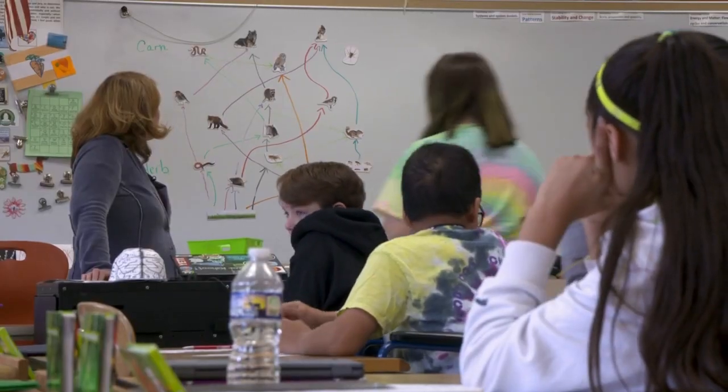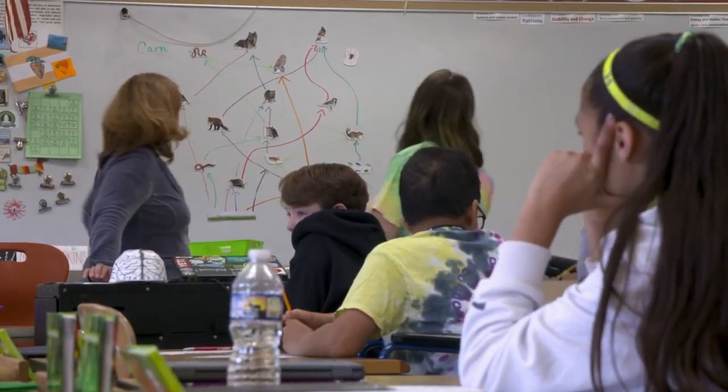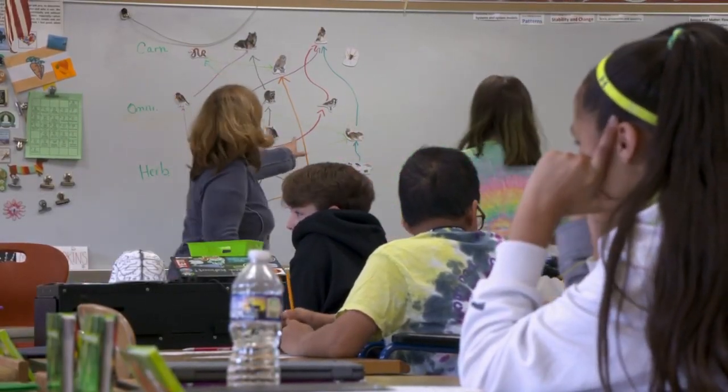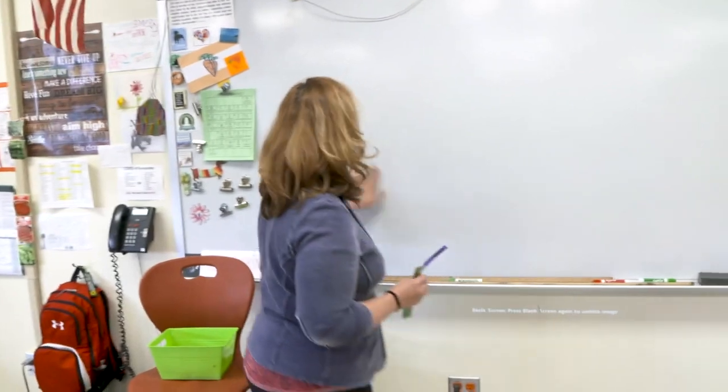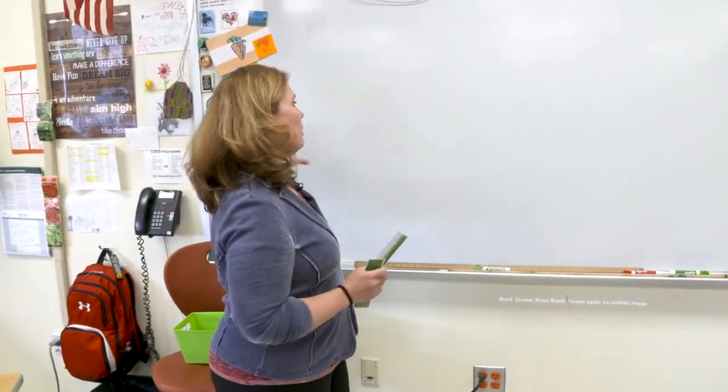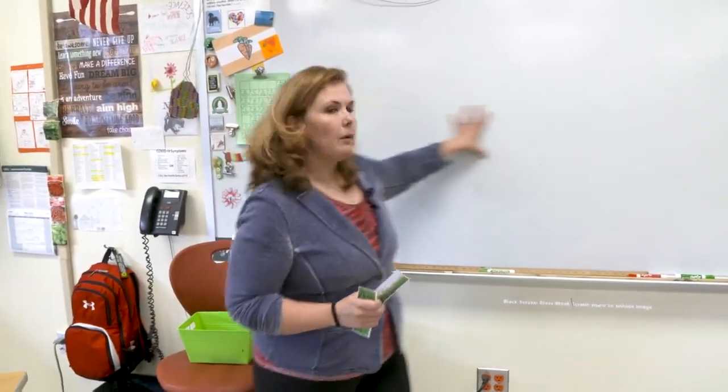Right now, specifically, we're learning about ecosystems. There are three different levels in the essential elements, and depending on the students, sometimes they may need to meet different levels, or they're all able to meet the same level. So I review the levels first to see what specific level I want them to reach, and then use that to guide which content I emphasize for those students.